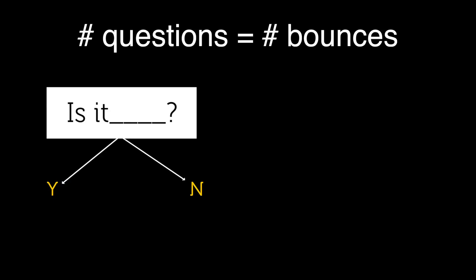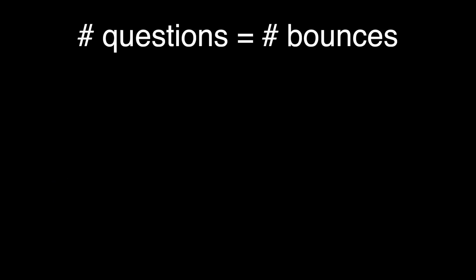Now, notice the connection between yes or no questions and fair bounces. The expected number of questions is equal to the expected number of bounces. So Machine 1 requires two bounces to generate a symbol, while guessing an unknown symbol requires two questions.